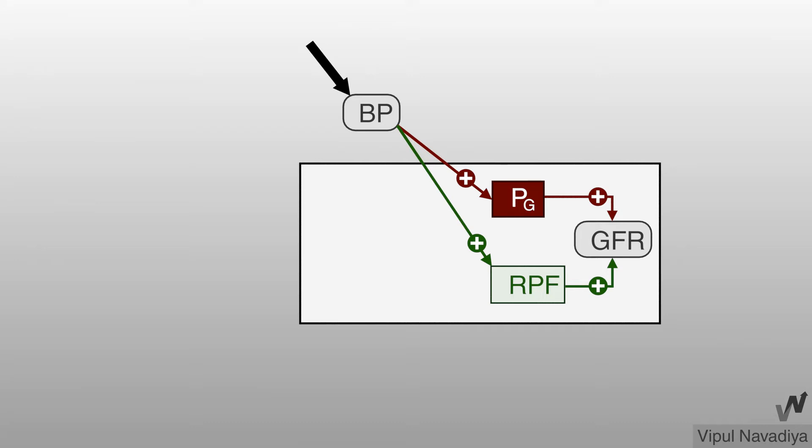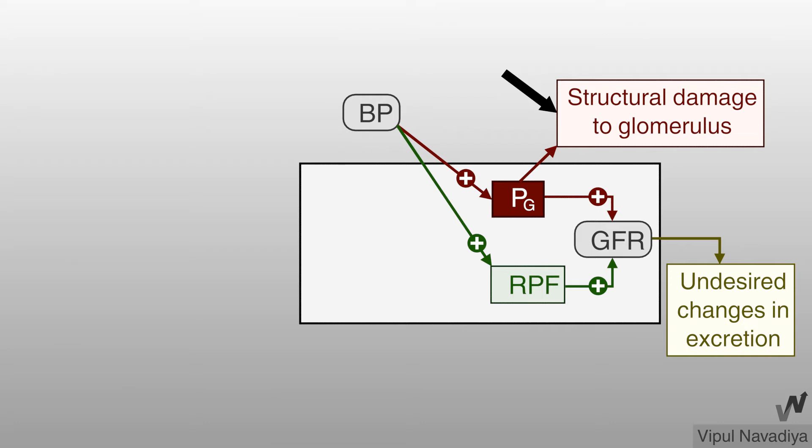Well changes in blood pressure are very common with our usual day to day activities. Without autoregulation such changes in blood pressure would produce undesired changes in GFR and thereby in excretion of various substances. Apart from this, increased glomerular hydrostatic pressure would cause structural damage to the glomerulus. Hence, here lies the actual importance of autoregulation in preventing these harmful consequences of changing systemic blood pressure.